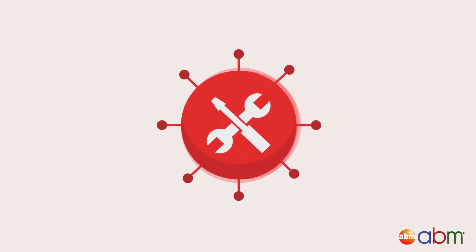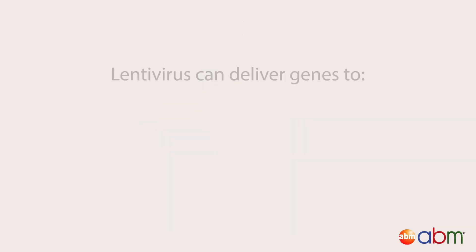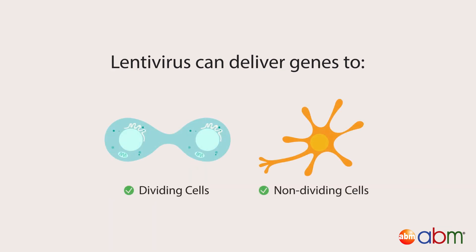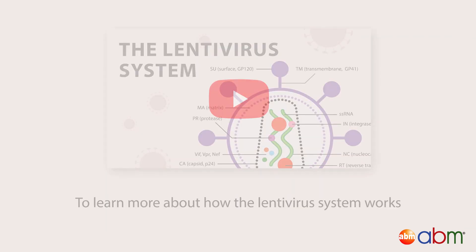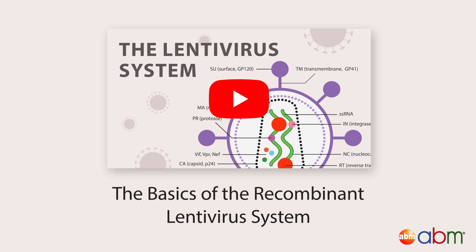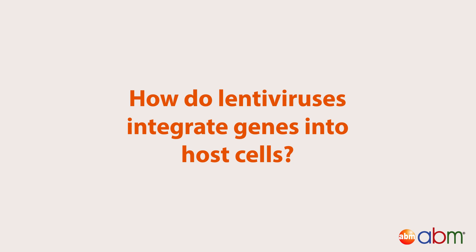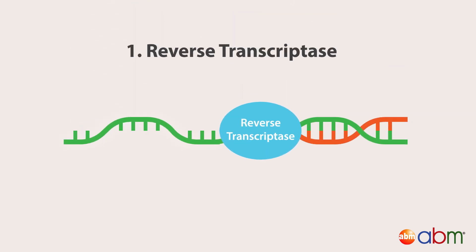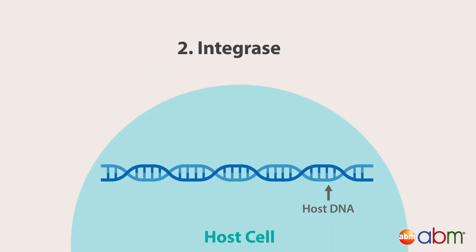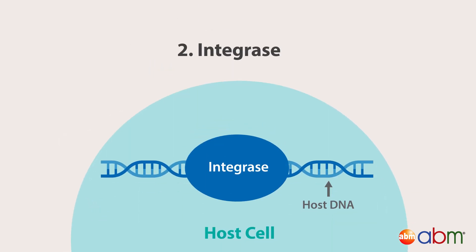The recombinant lentivirus is an incredibly useful tool for delivering genes to not only dividing cells, but also post-mitotic non-dividing cells like neurons. To learn more about how the lentivirus system works, watch our video on the basics of the recombinant lentivirus system. In a nutshell, lentiviruses express two enzymes that enable them to integrate genes into a host cell: